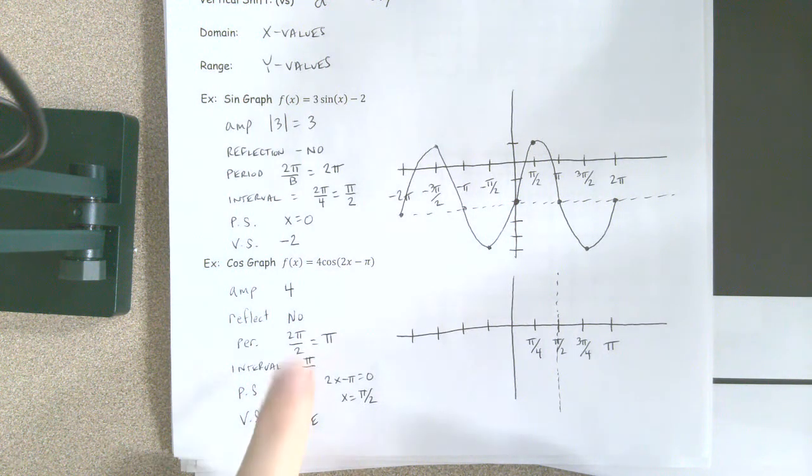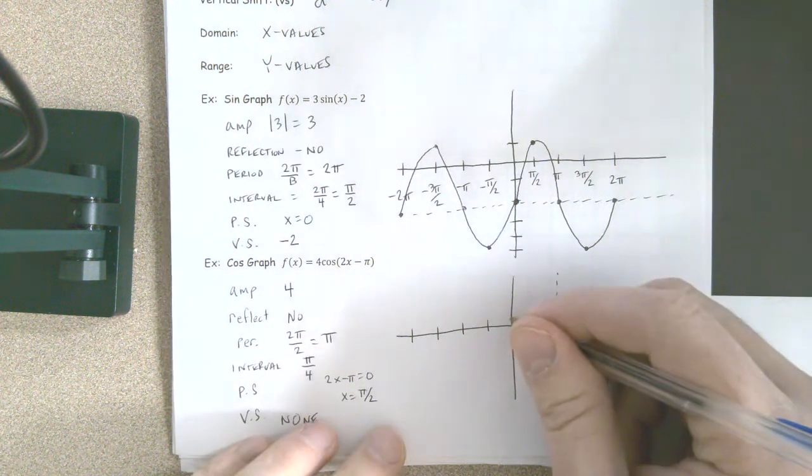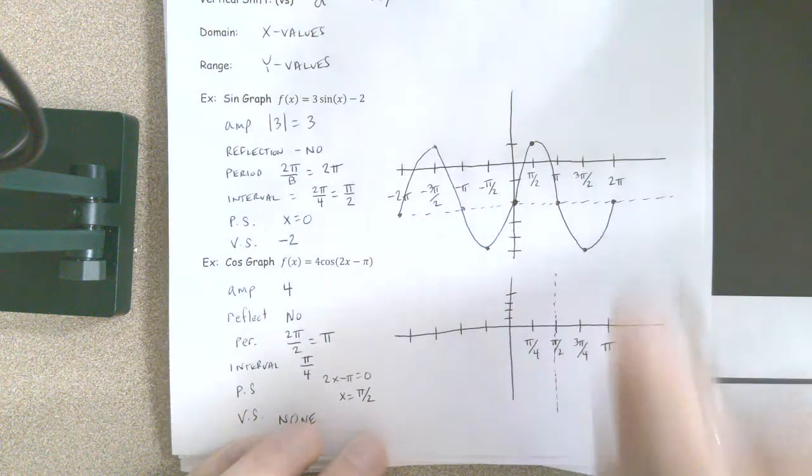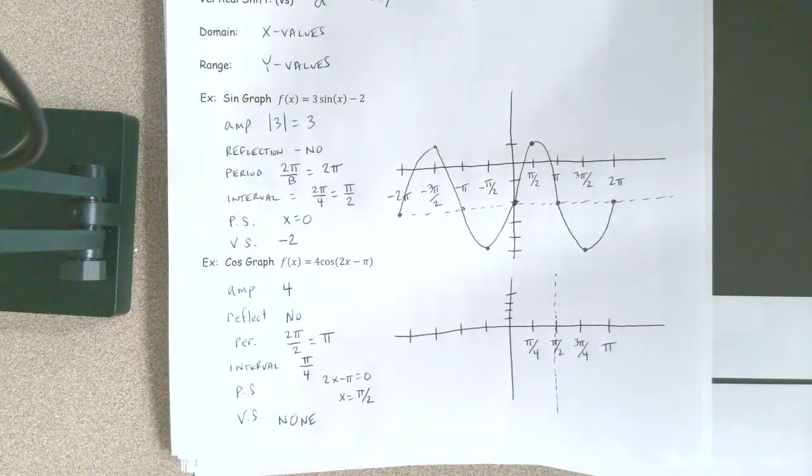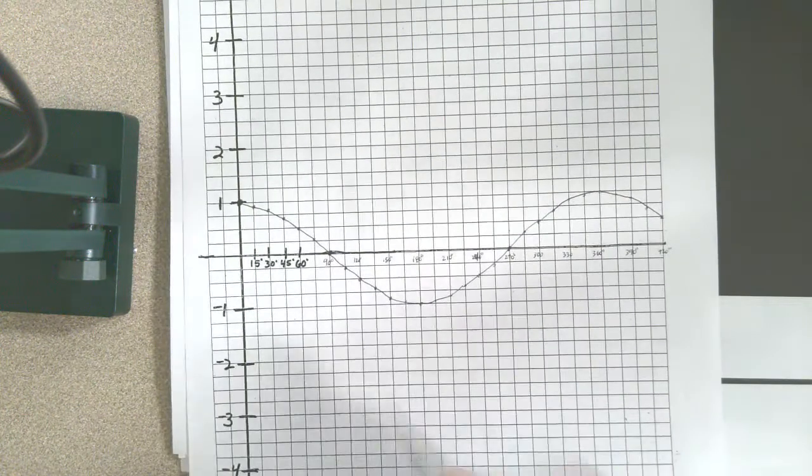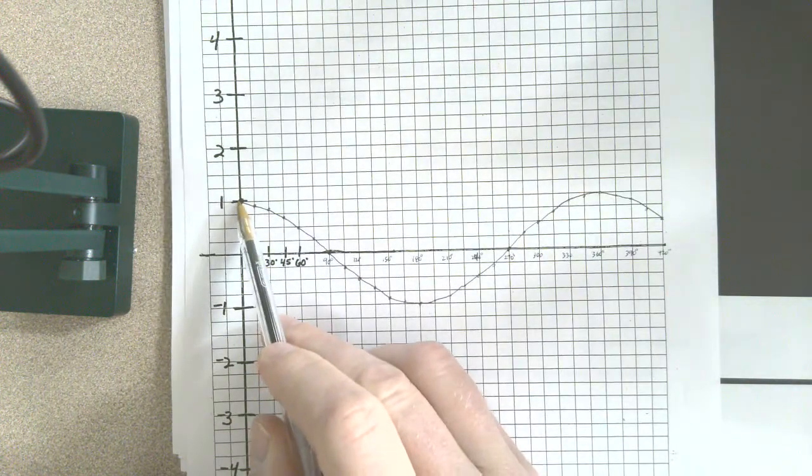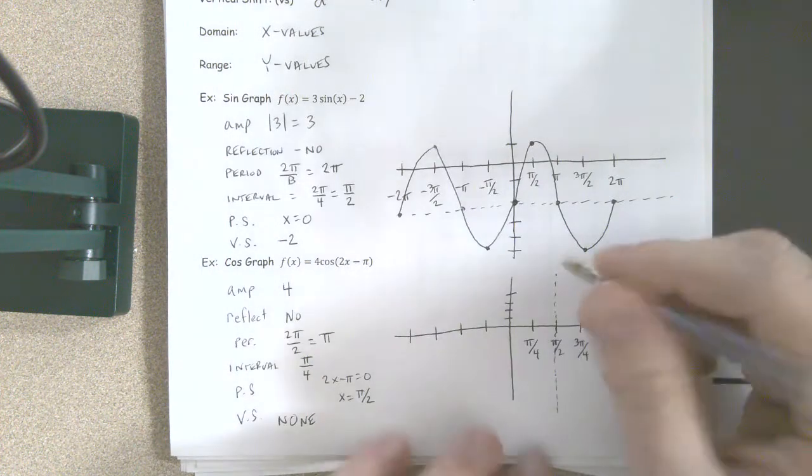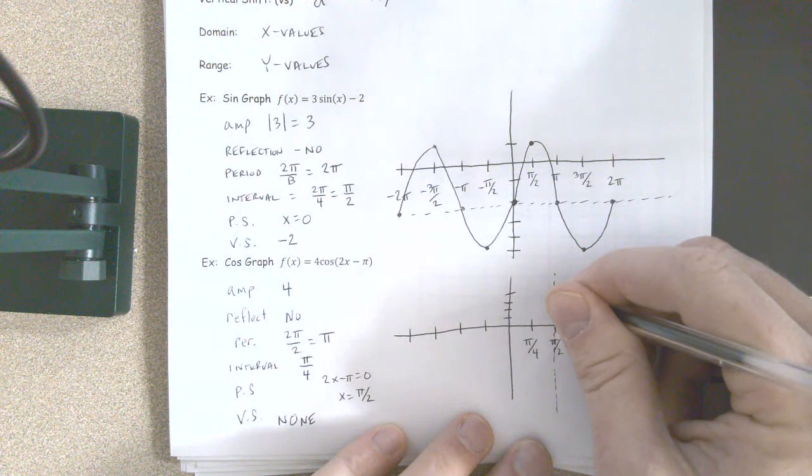And we also know that the amplitude is 4, so at my starting point, remember for the cosine curve, cosine curve on our original curve is a U-shaped. So remember, we're starting at our maximum value. So on this one, we're going to start at 4. I'm starting up here at 4 on my dotted line.